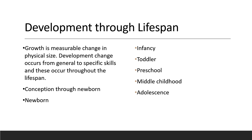As a toddler, the child will begin to walk and run with ease. The time frame for this is 12 months to 36 months. During this time, the individual will be toilet trained, and often children learn bowel control before they learn bladder control. By the time the individual is three years old, they are easily ready to climb, run, and jump.